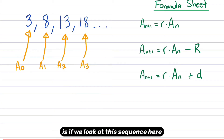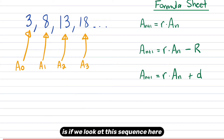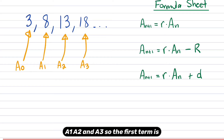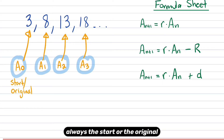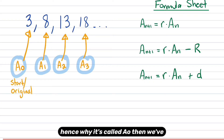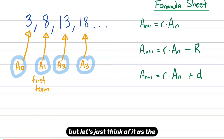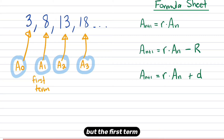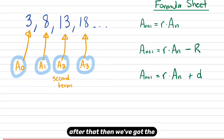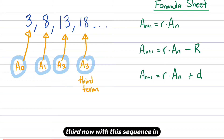What I mean by that is, if we look at this sequence here — a really basic sequence — we've got a0, a1, a2, and a3. The first term is always the start or the original, hence why it's called a0. Then a1 is the first term after the original, then we've got the second term, then the third term.